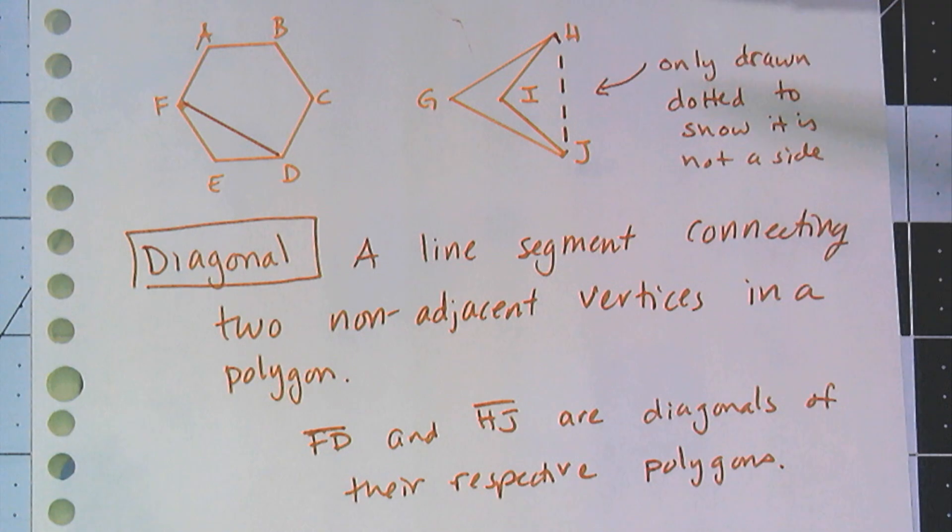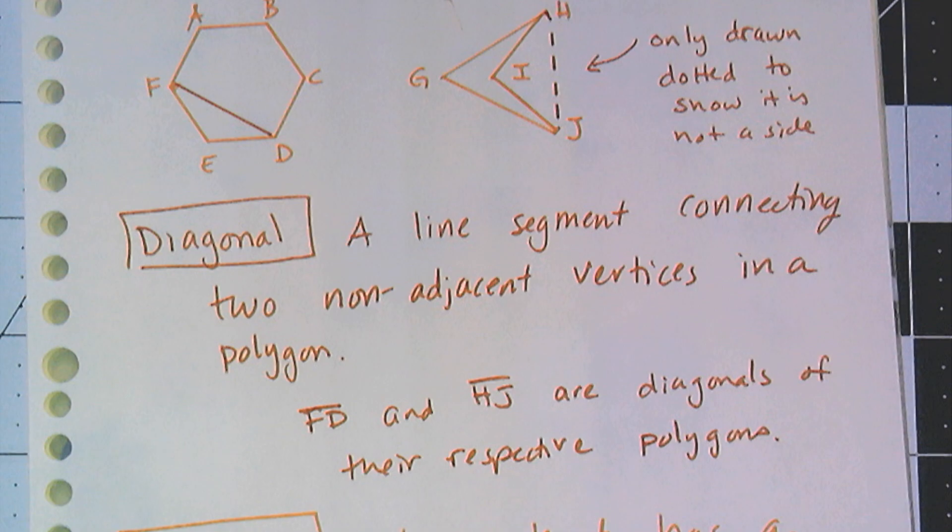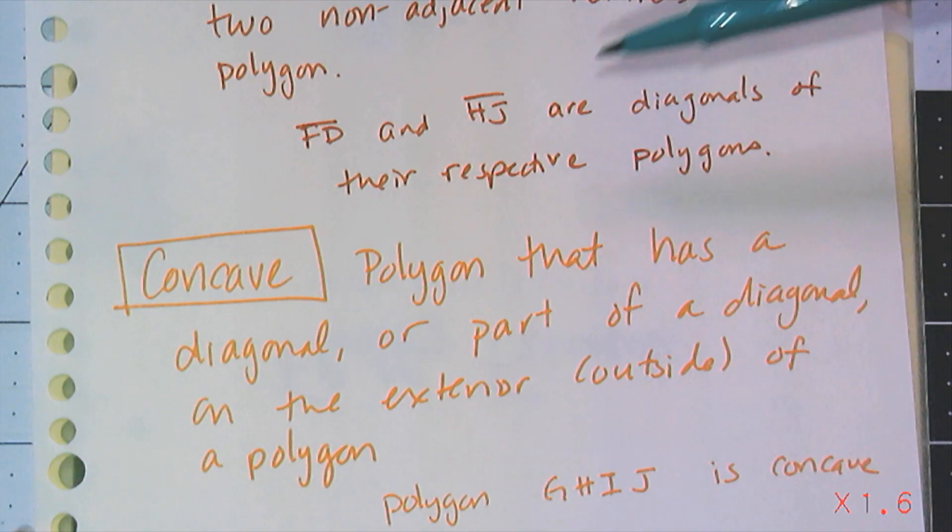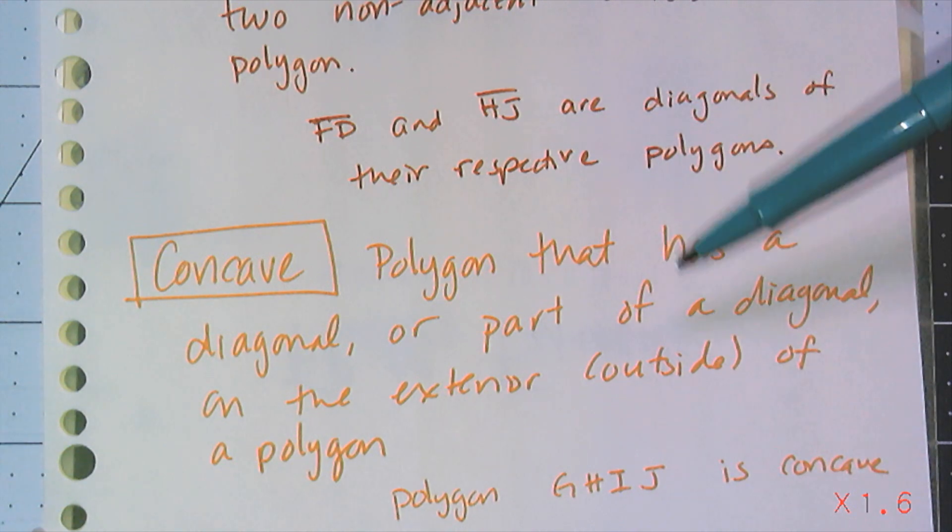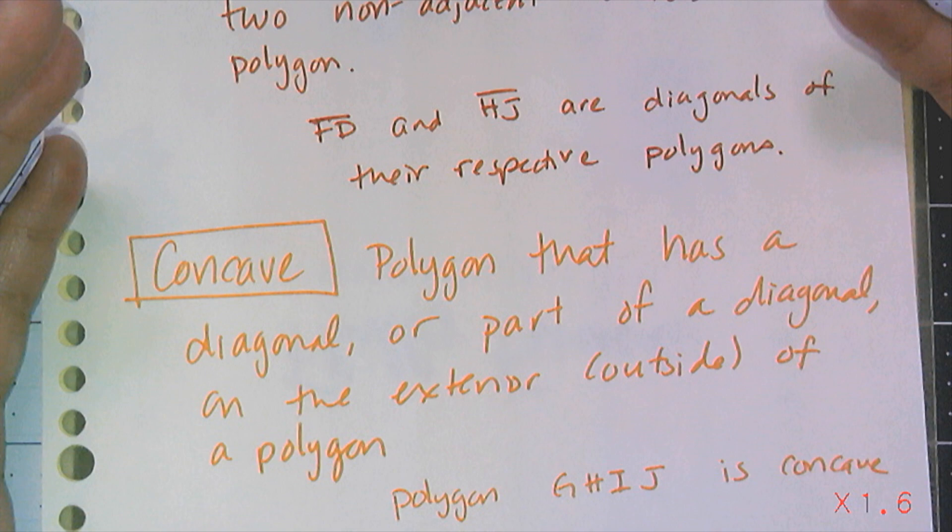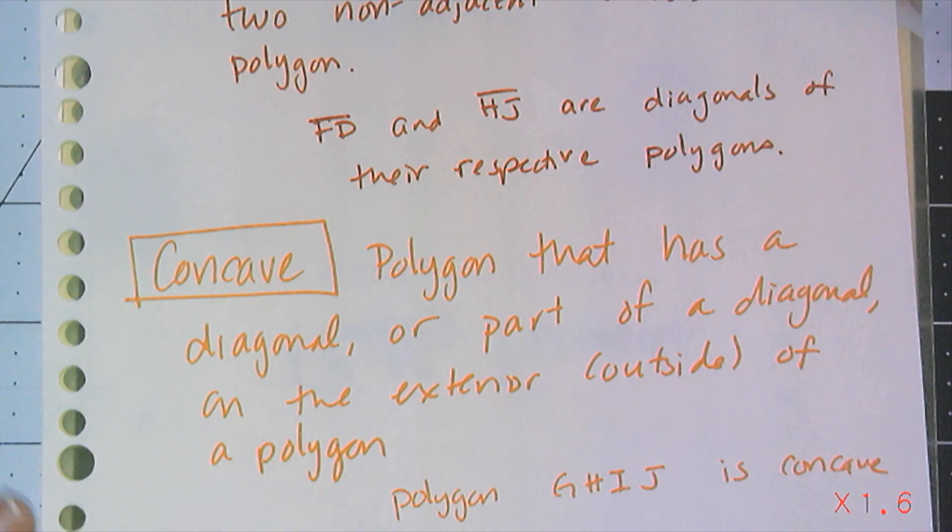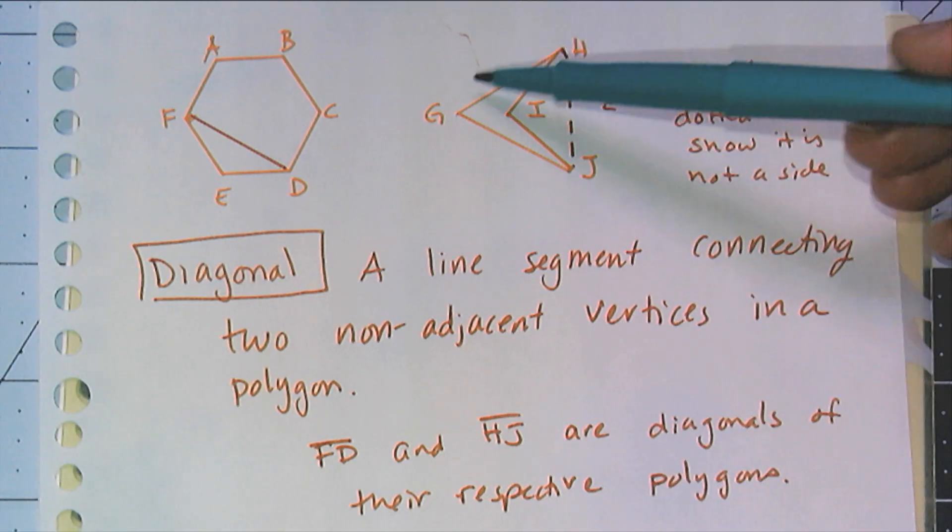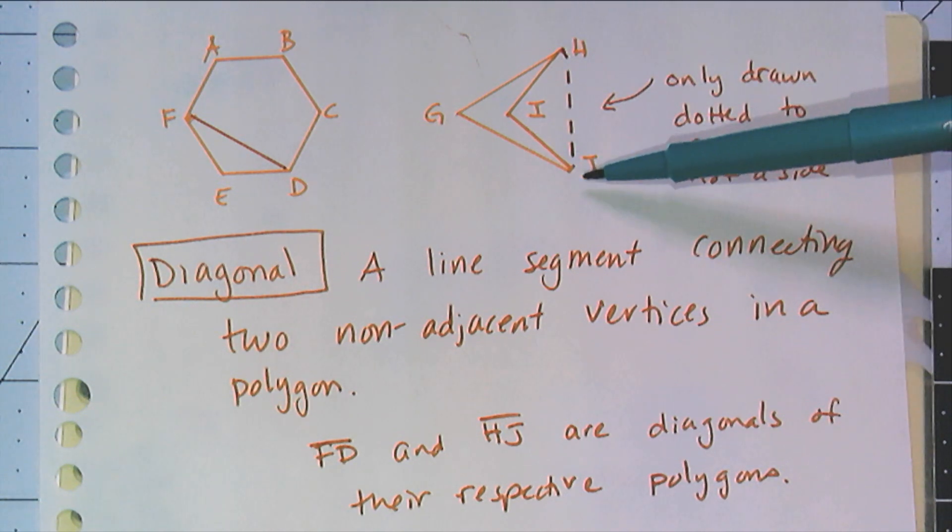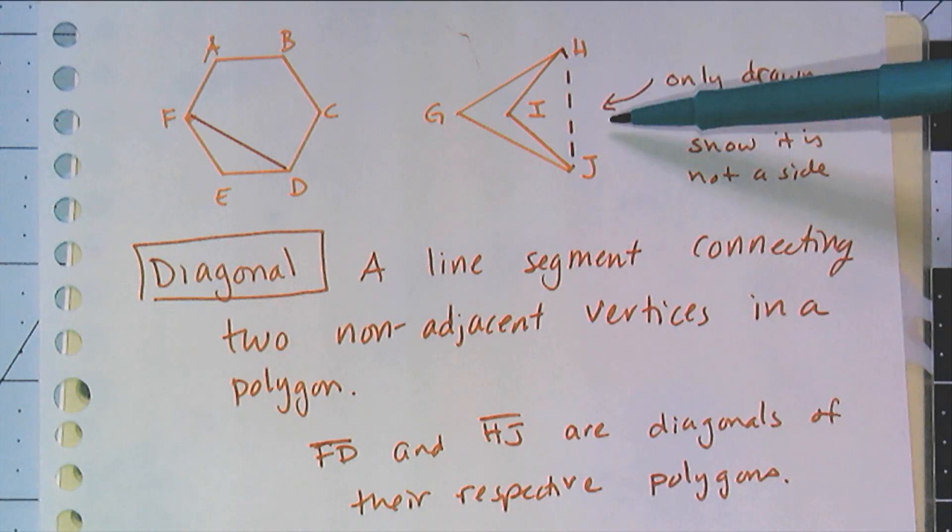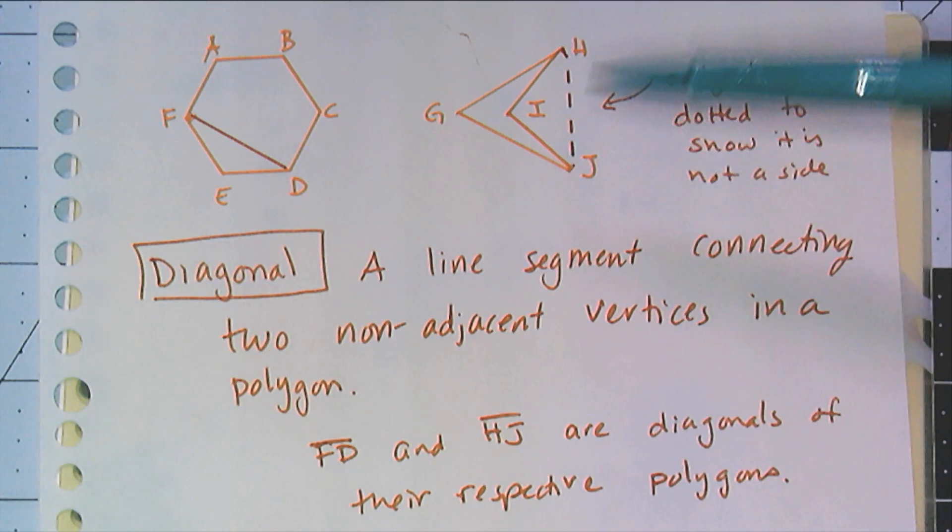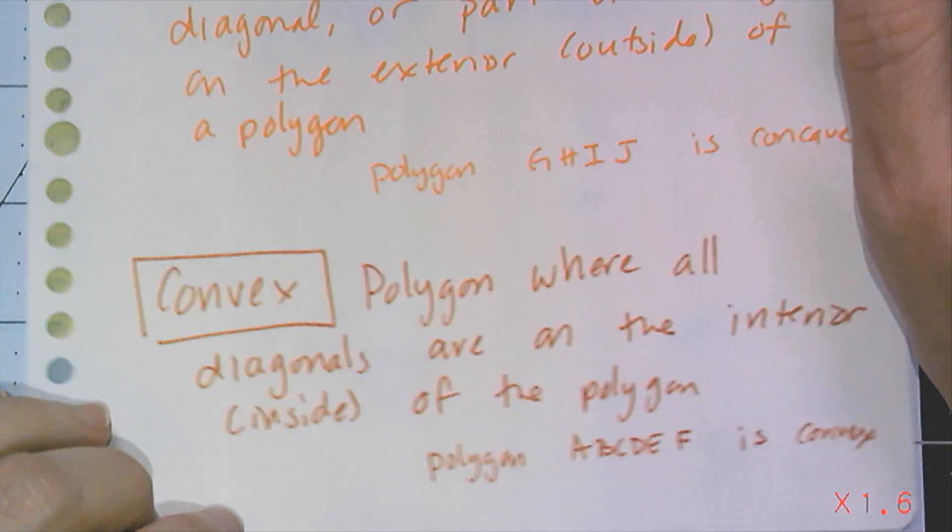Because I need to give you two more words about polygons, which are ways to classify polygons. One way is called a concave polygon, and that's a polygon where a diagonal or part of a diagonal is on the outside of the polygon. So polygon GHIJ is concave because this diagonal I drew is outside of the polygon. It doesn't have to be the entire diagonal, just part of it.